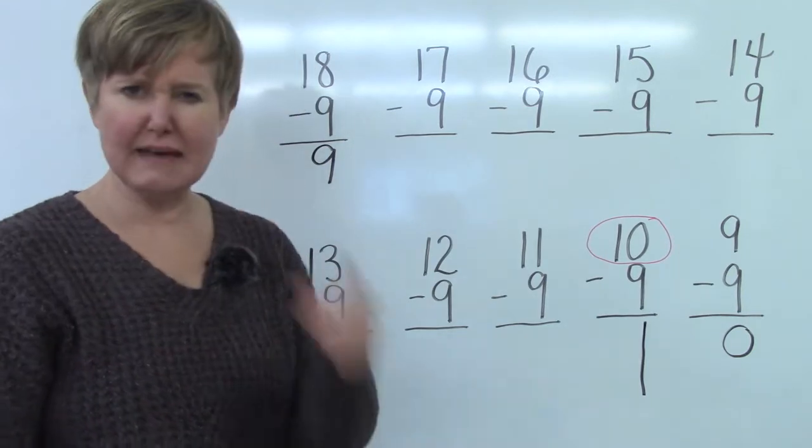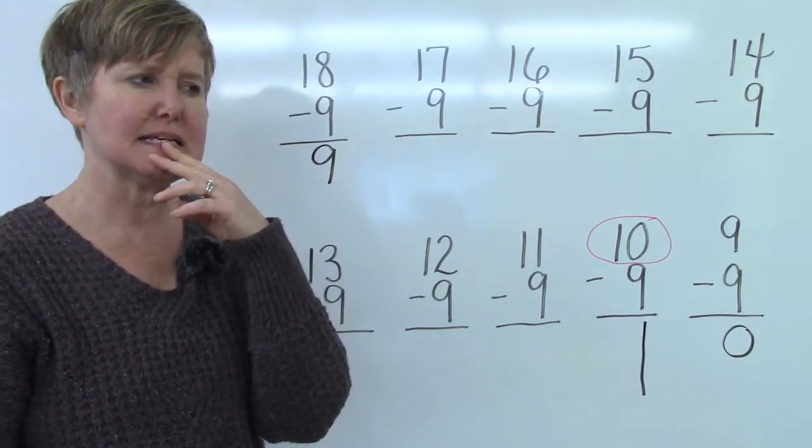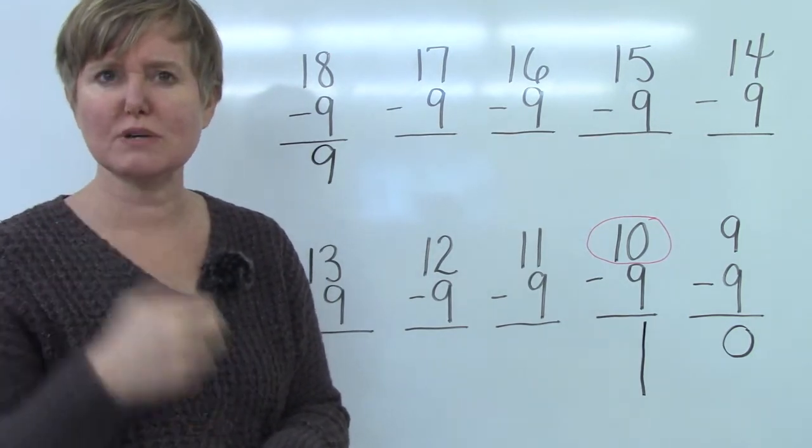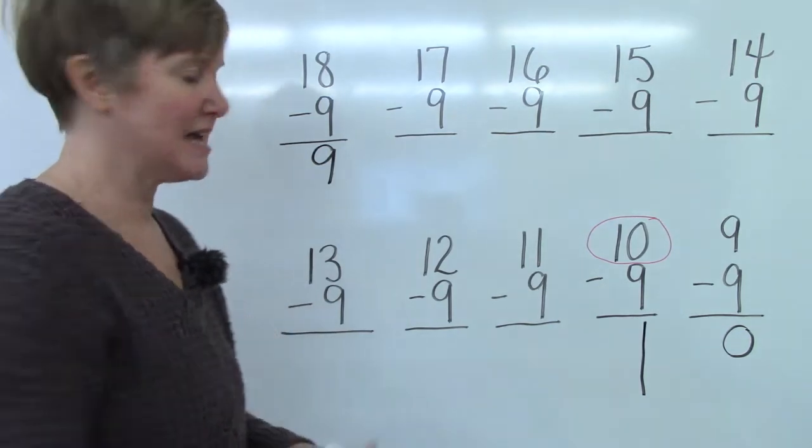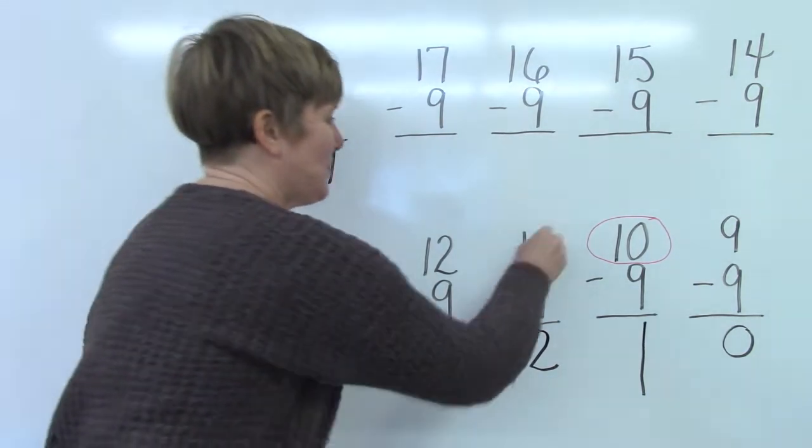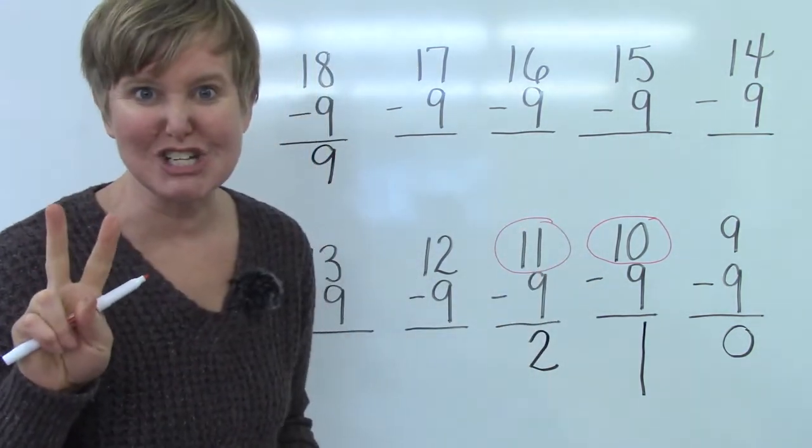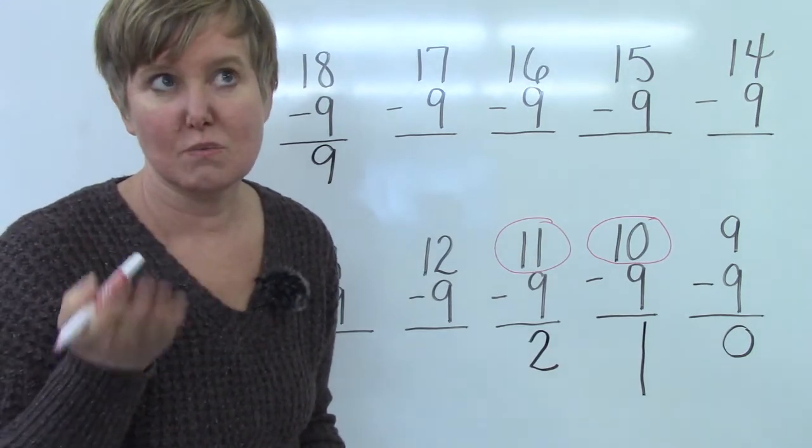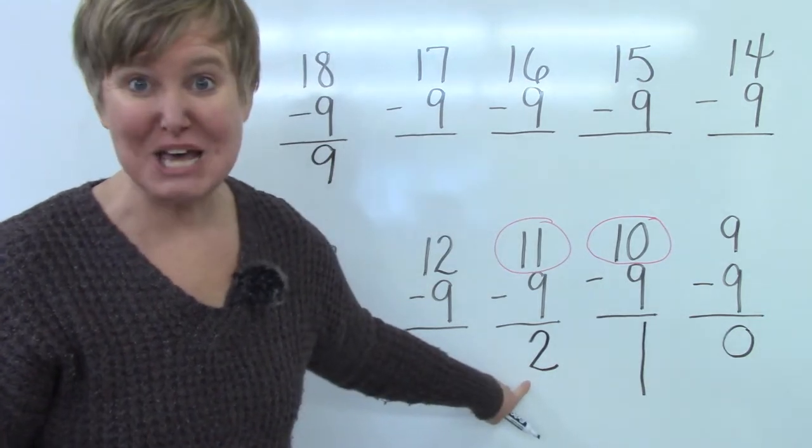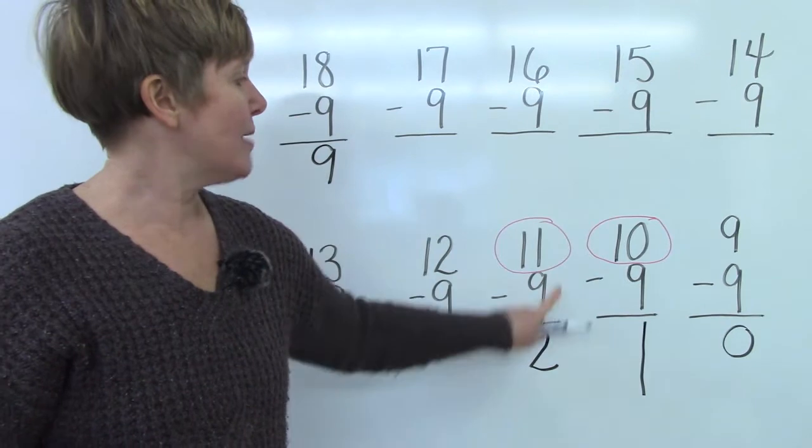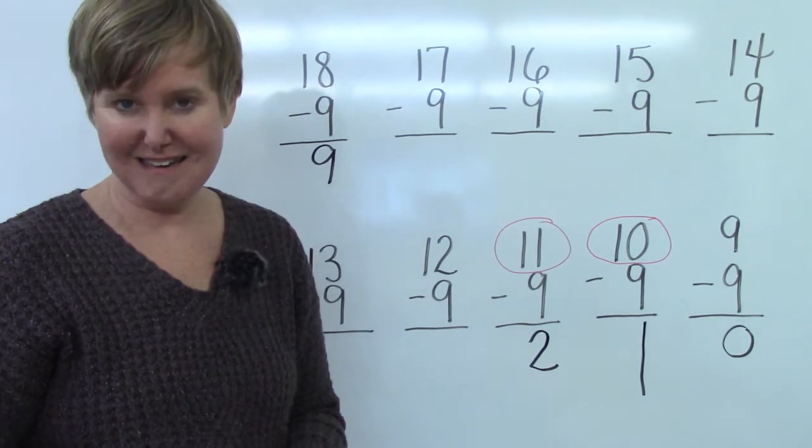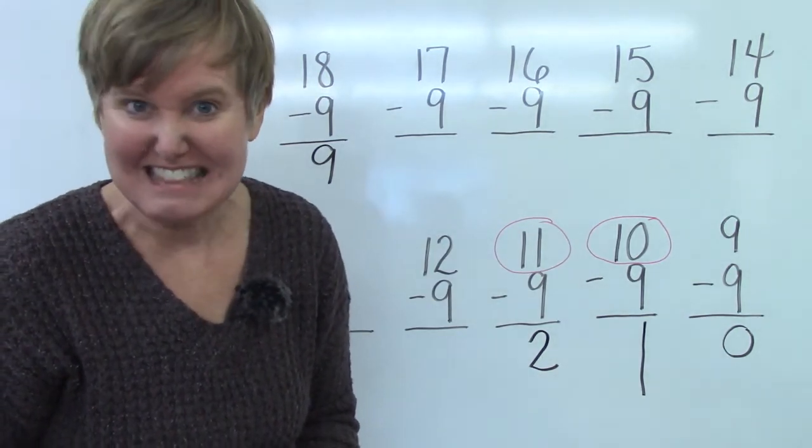Well let's look at eleven take away nine. We would have nine ten eleven. It would only take two more to get to eleven. So eleven take away nine is two. Well let's look at our trick again. We're going to look at the number eleven. There's two digits in it. One and a one. When we add one plus one together what's the answer? It's two! On both of these if you add the two digits of your top number it gives you the answer to the question. I think that's such a fun trick.